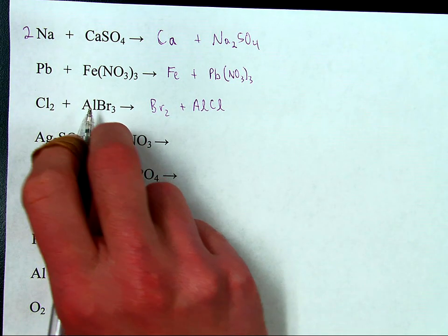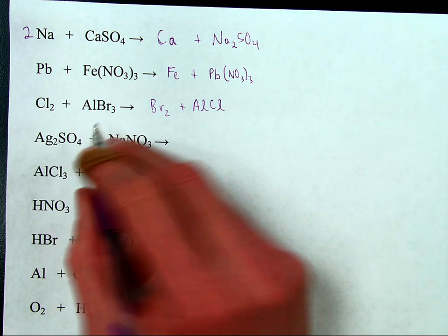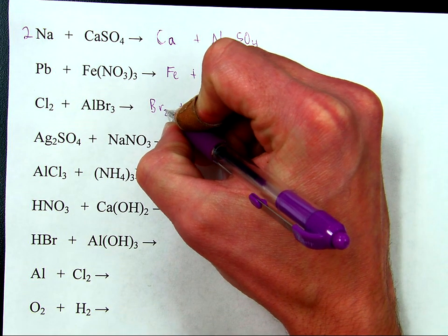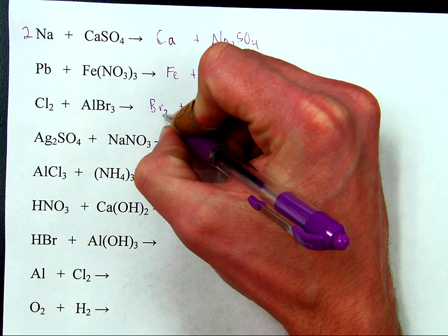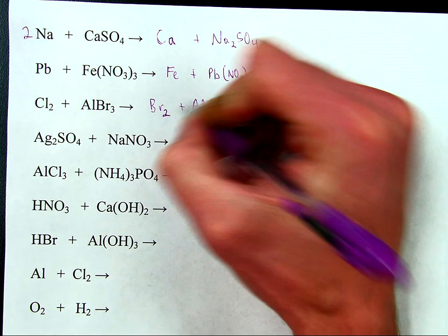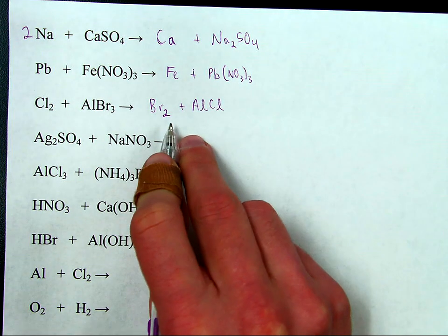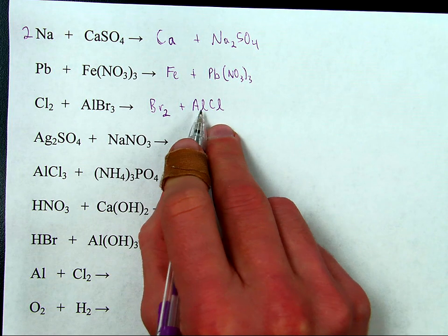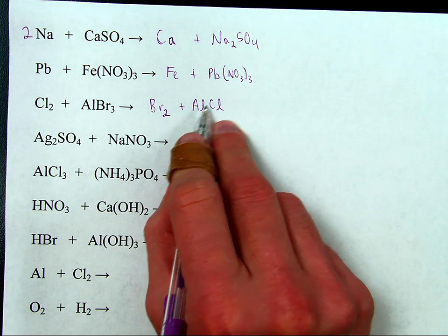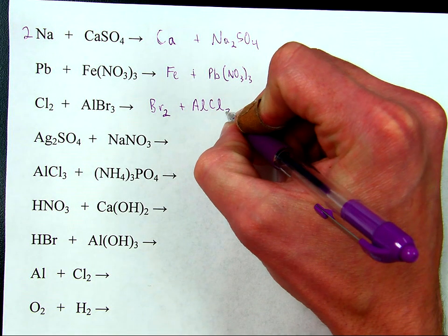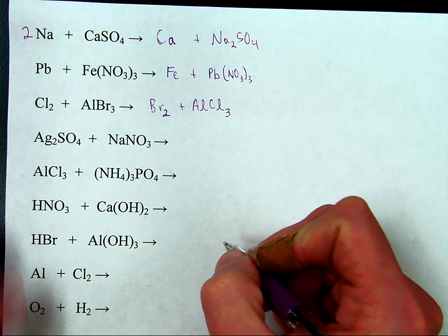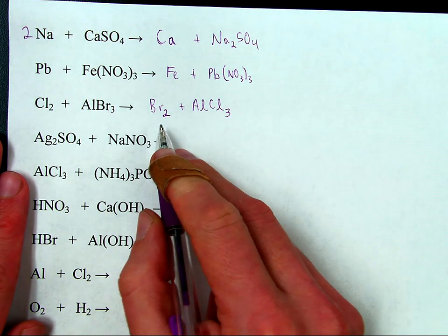Step two: make sure the formulas are correct. Bromine is a diatomic element, so that's why it's Br2. Aluminum is a plus three, chlorine is a minus one. Therefore, the formula is AlCl3. Step two done — I've fixed the formulas.